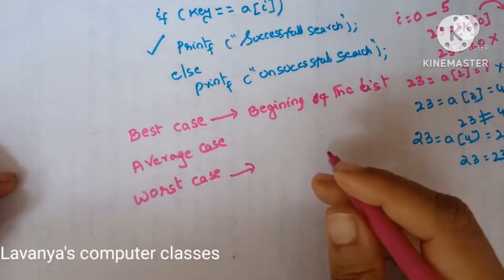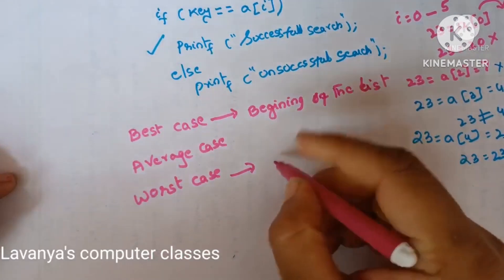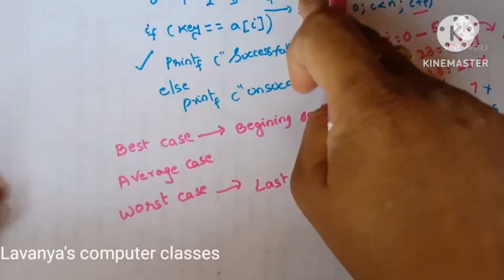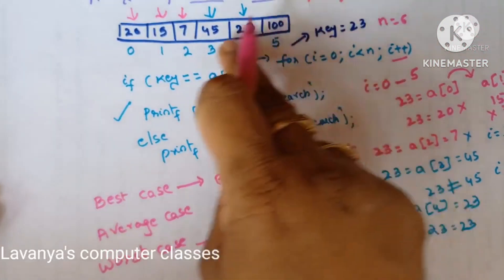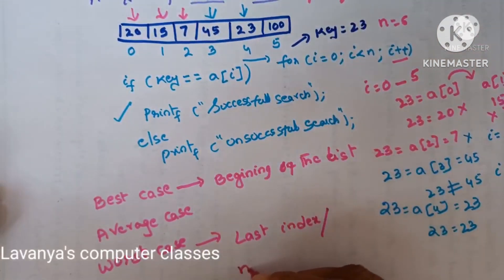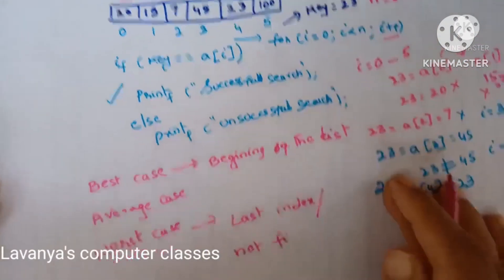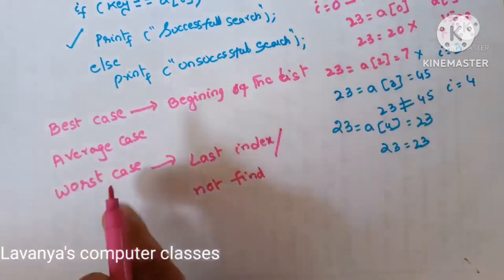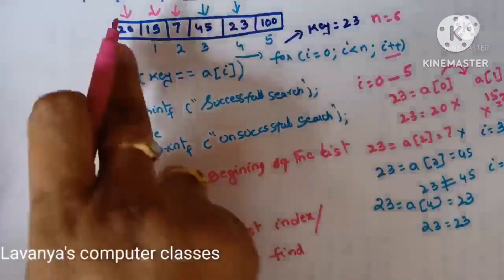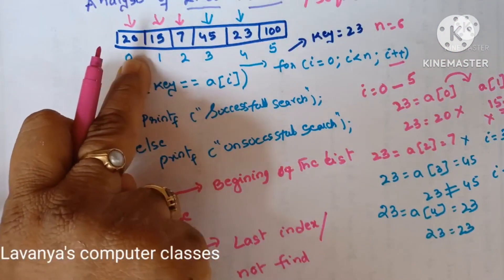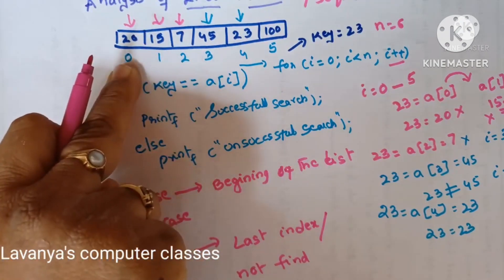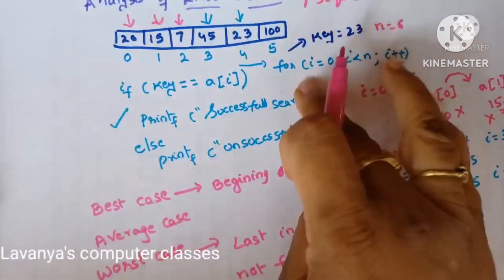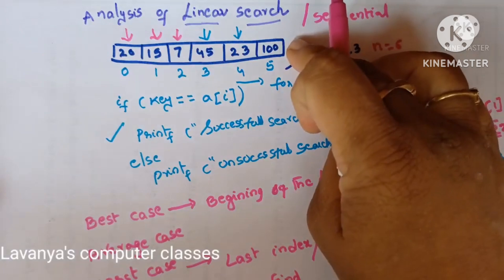Worst case — what is the worst case? Worst case means searching for a key at the last index. The last index means the last element. That means the search key is at the last element, or is totally not found in the list. Either it is at the last index or not found — that is also called the worst case. Best case means the element is available at the first index, that is the 0th index. Worst case means the element is not present at all, or if present it is the last value.